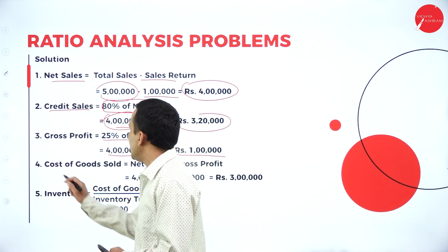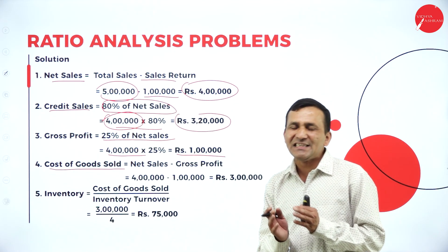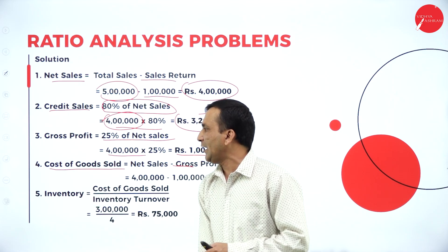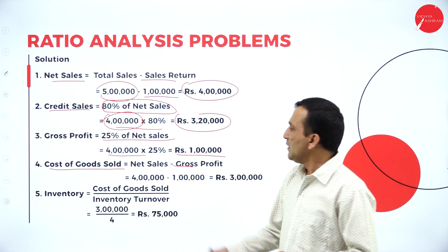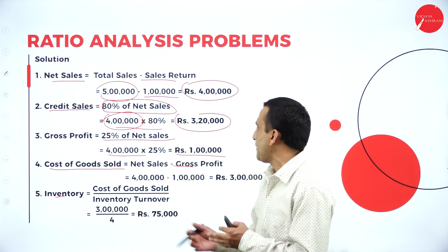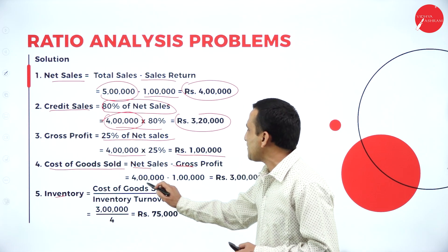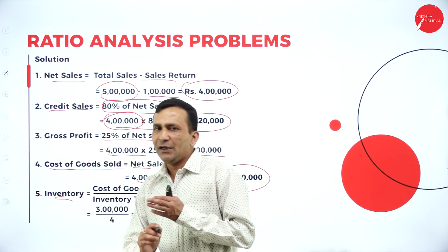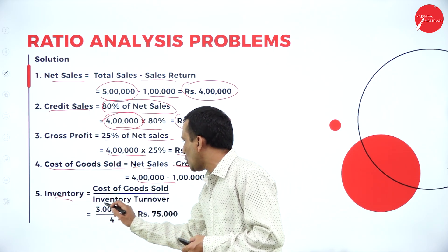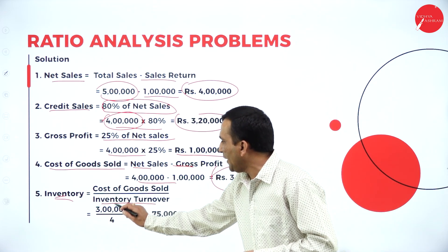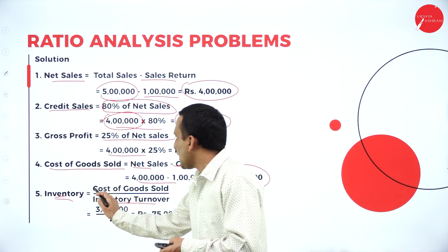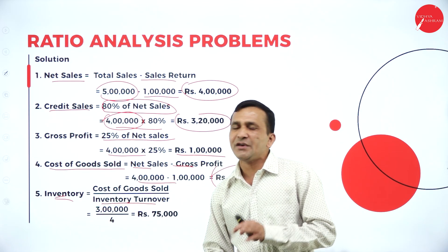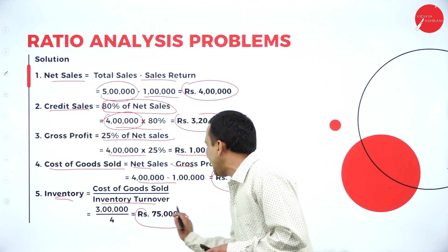The cost of goods sold — how we find it: from net sales, subtract gross profit. Net sales 4 lakhs minus gross profit 1 lakh gives cost of goods sold of 3 lakhs. This is important because inventory calculation depends on it. Inventory turnover ratio: cost of goods sold divided by inventory equals 4. So inventory is 3 lakhs divided by 4, giving us 75,000.